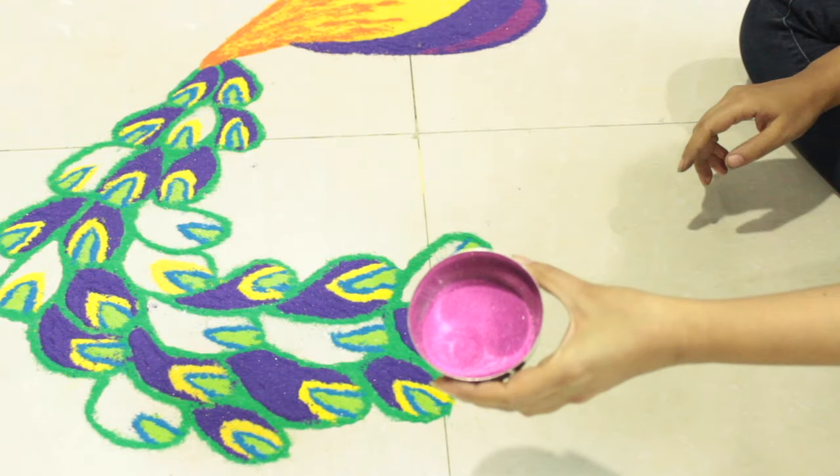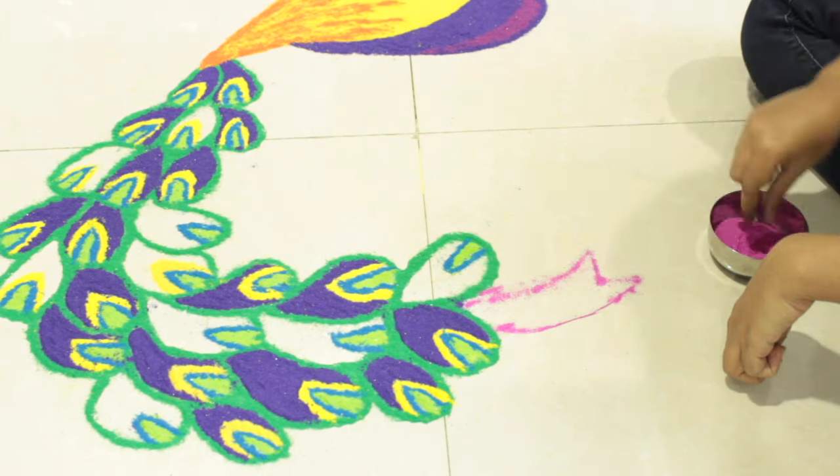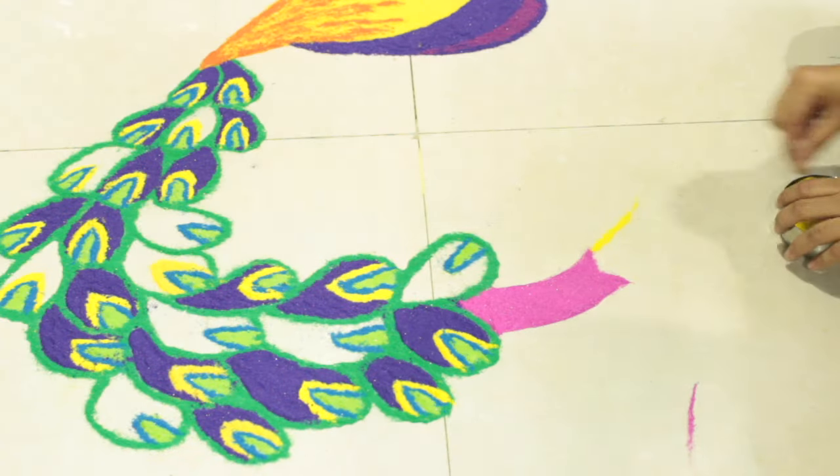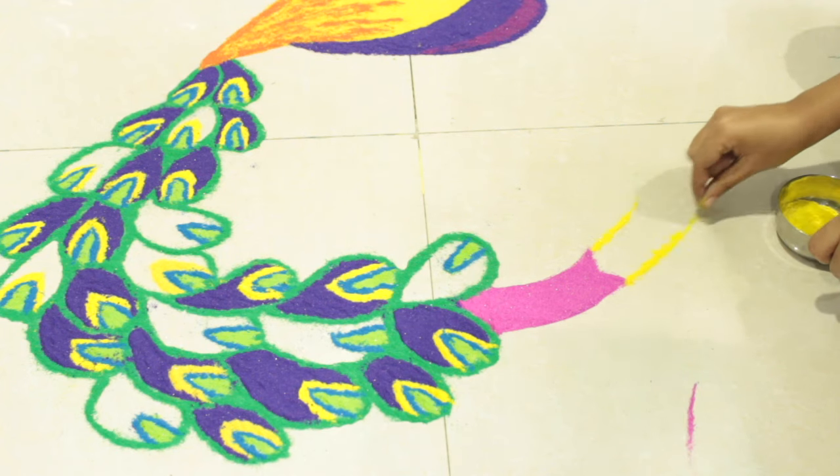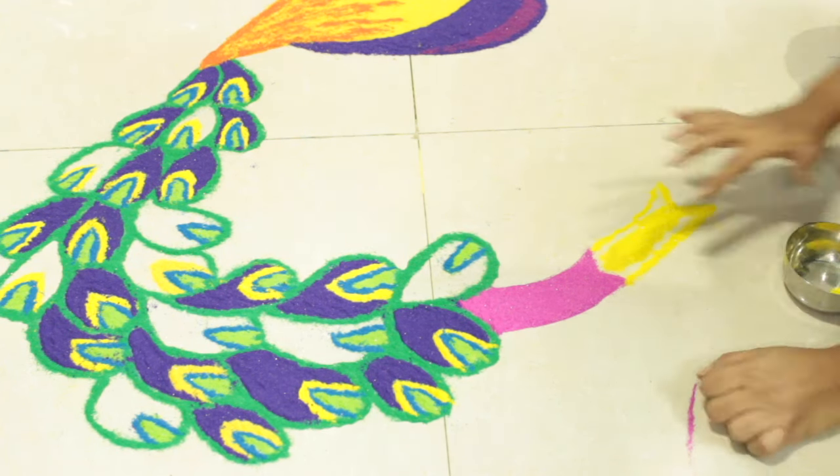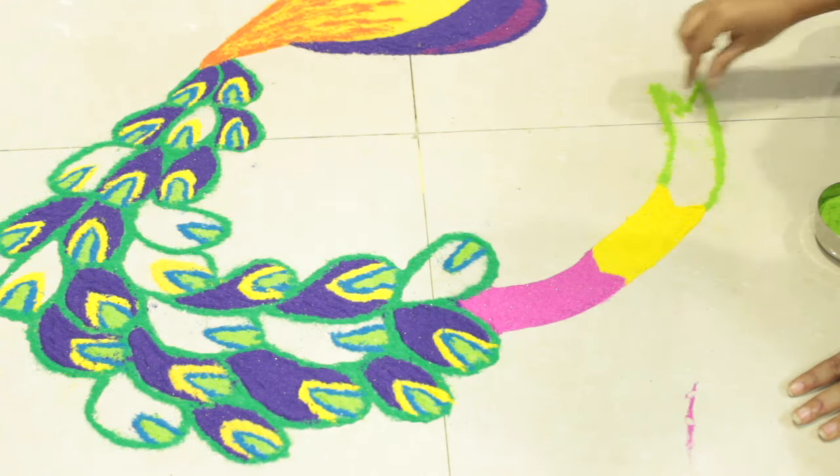Now take a bright pink color and start drawing a design like this at the end of the feathers. Follow this up with a similar design using yellow color, and then follow it up with lime green color.